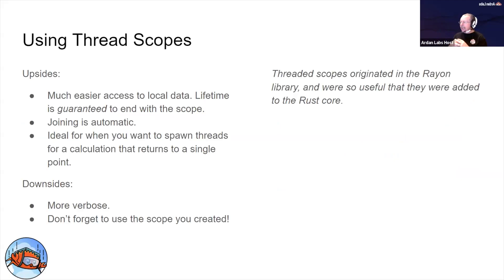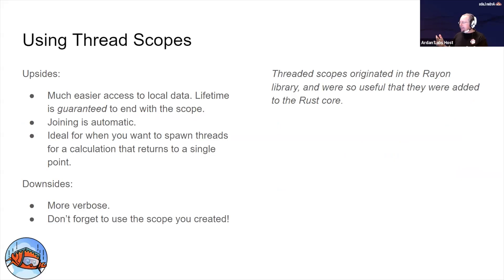Not long after Rust 1.0 came out, enough of us complained about the difficulties of accessing local scope variables, so scoped threads were added to the standard library. They make it much easier to access local data because the lifetime is guaranteed — it is absolutely guaranteed that whatever threads you create in a scope will terminate at the end of that scope.